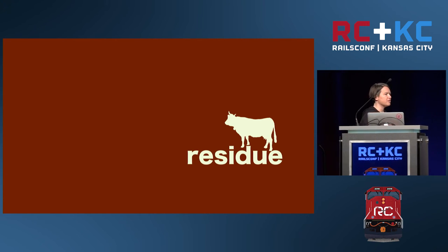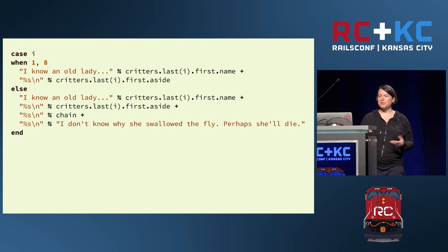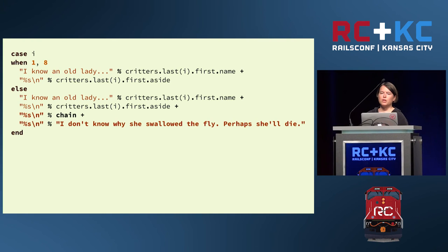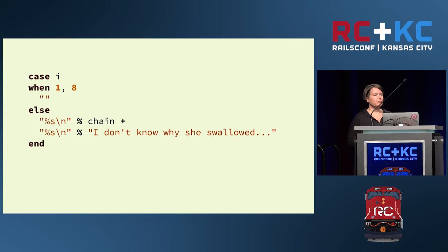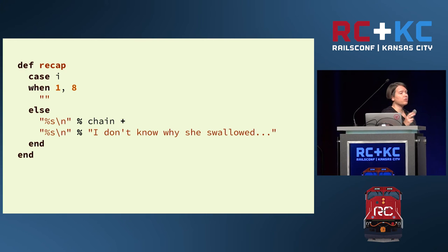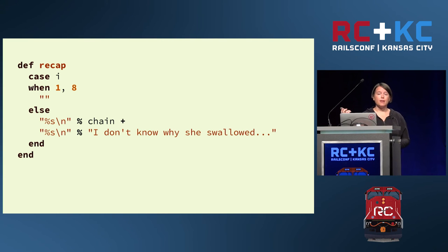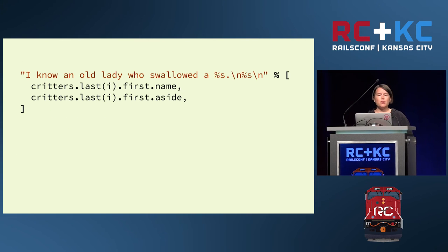The verse class is looking pretty decent from the outside. It's pretty gross on the inside — the most glaring thing is the case statement, which is still sticking around with blatant duplication. As before, ignore the sameness, focus on the smallest difference, create a small focused symmetrical conditional, and name it. In this context, the narrator is summarizing or recapping everything that has happened up to this point. There are two verses where there's nothing to summarize — the very first verse, where nothing has happened yet, and the very last verse, where the little old lady is dead. Having extracted the recap, the duplication in 2s can be collapsed and named.